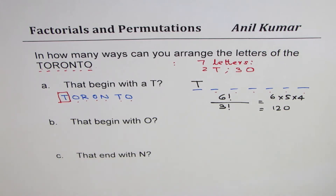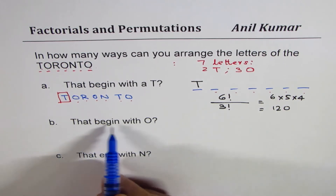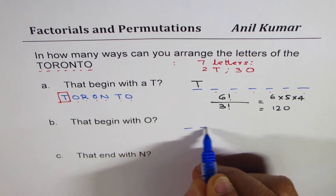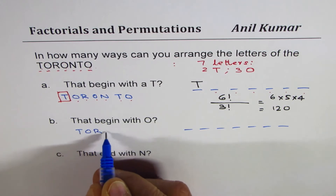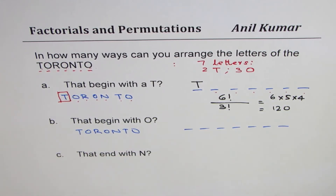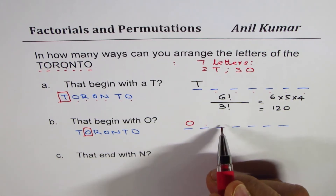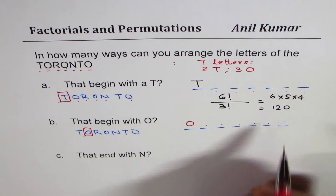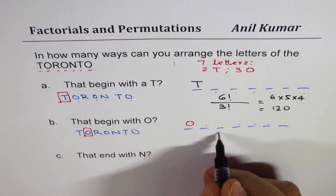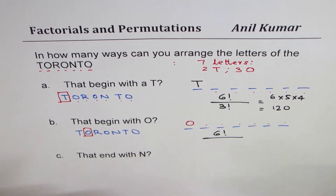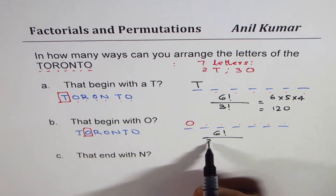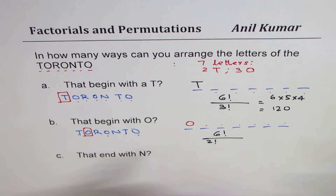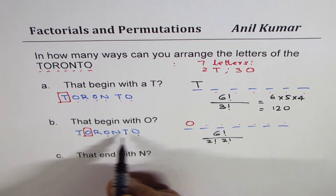The second condition is slightly different — the word begins with O. We still have seven positions for the word Toronto, and we fix O in the first position. That leaves six positions to fill. So we have six factorial divided by the repeated letters: we have two T's, so two factorial, and two remaining O's, so another two factorial.